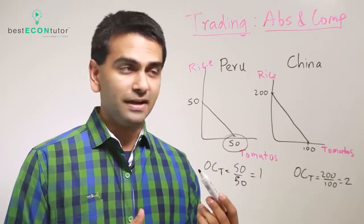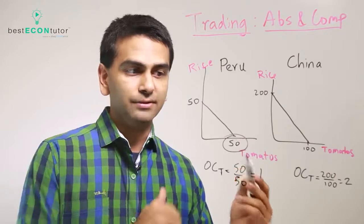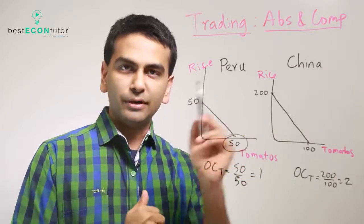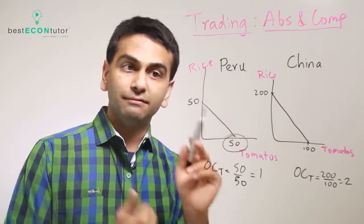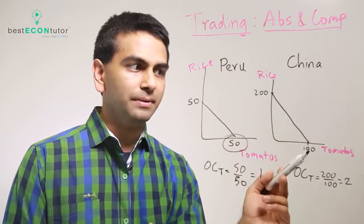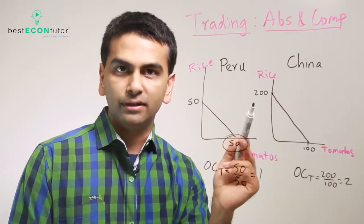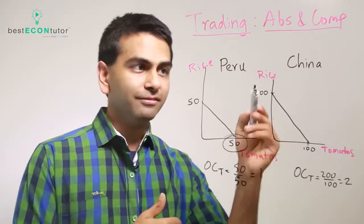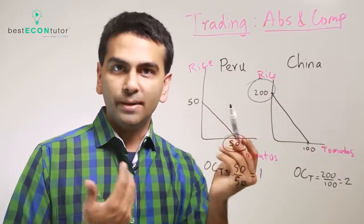If we were to do the math just to verify, if we wanted to look at the cost now not of tomatoes but of rice, Peru's cost of rice would be 50 over 50, still 1. But now China's cost of rice would be a hundred over 200, which is a half. And a half is less than 1.